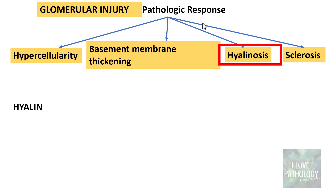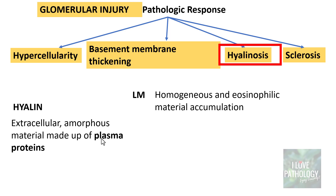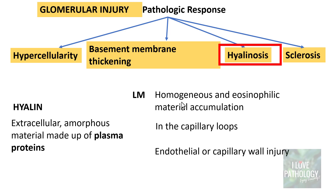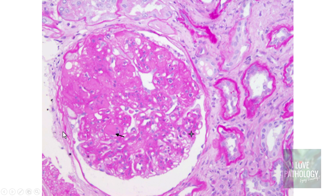The third response is hyalineosis. Hyaline is basically an extracellular amorphous material made up of plasma proteins. On light microscopy, hyalineosis is seen as homogenous and eosinophilic material accumulation in the capillary loops, and this could be because of endothelial or capillary wall injury. It obliterates the capillary lumen. Remember hyaline is often seen in early stages of renal damage. There is accumulation of this eosinophilic material within the glomerular capillary basement membrane and within the capillary loops.